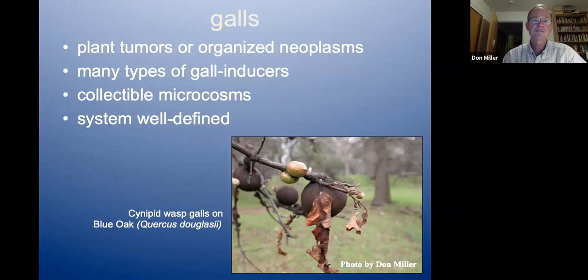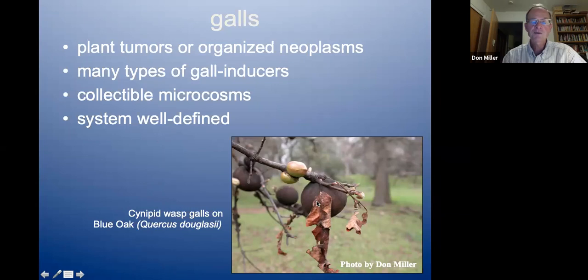Galls are very diverse, numerous, and relatively collectible — that's nice for ecological work. You can collect them like berries from a bush, take them to the lab, and examine them under a microscope. You have a well-defined system and can readily determine what's inside versus outside the gall. This photo is of a cynipid wasp gall on Quercus douglasii.